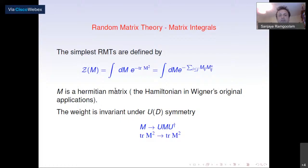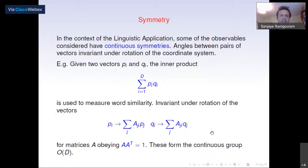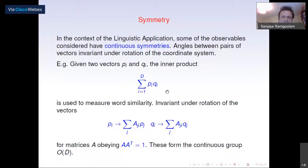This matrix model is invariant under U(d) unitary symmetry, where M goes to U M U-dagger, which leaves trace M-squared invariant. In the linguistic context, we might think of natural continuous symmetries. Often when one has vectors p and q for two words, one looks at the inner product, which is invariant under orthogonal transformations: if p transforms to Ap and q to Aq where A-transpose equals A-inverse, this quantity is invariant. So we're extracting O(d)-invariant quantities from the data.